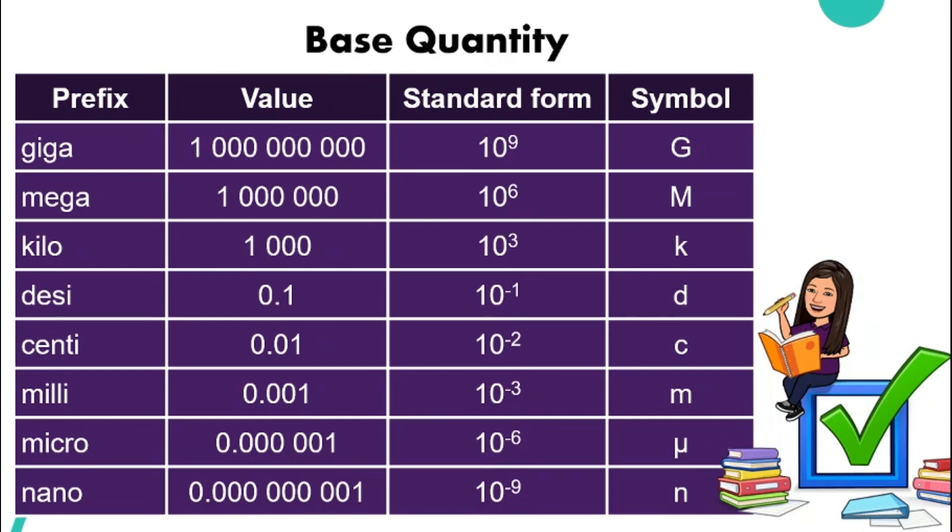Sometimes when we write down the SI unit for certain value, it becomes very big. For example, for length or distance between the sun and our planet Earth. If we write it in meters, the numbers become very, very big. It can be very difficult to write and also very difficult to read. This is when we need prefix. What are some of the prefix that we have? Let's take a look at the first one.